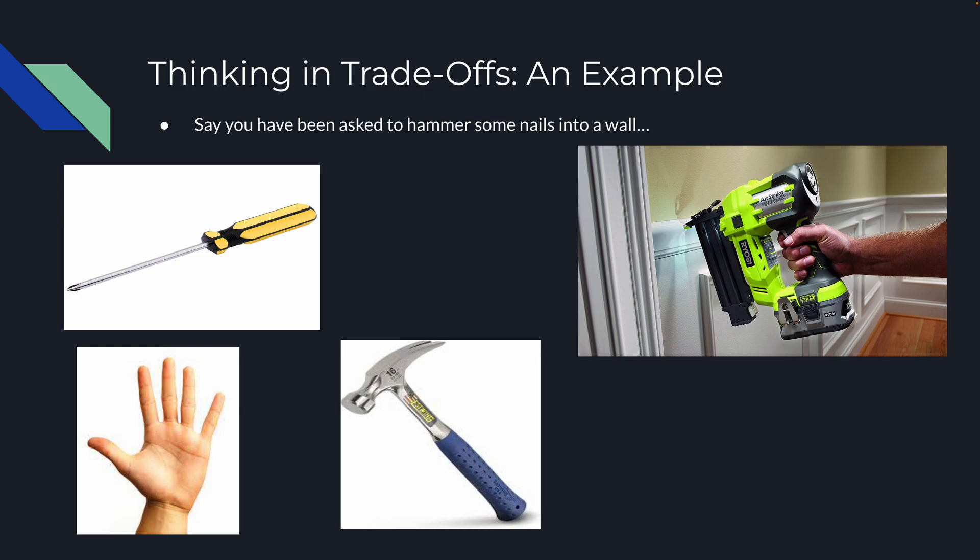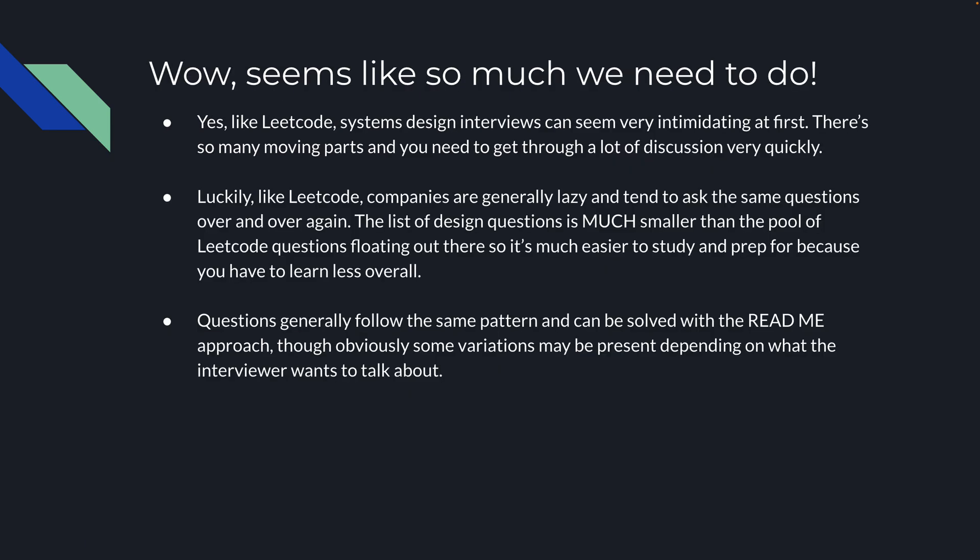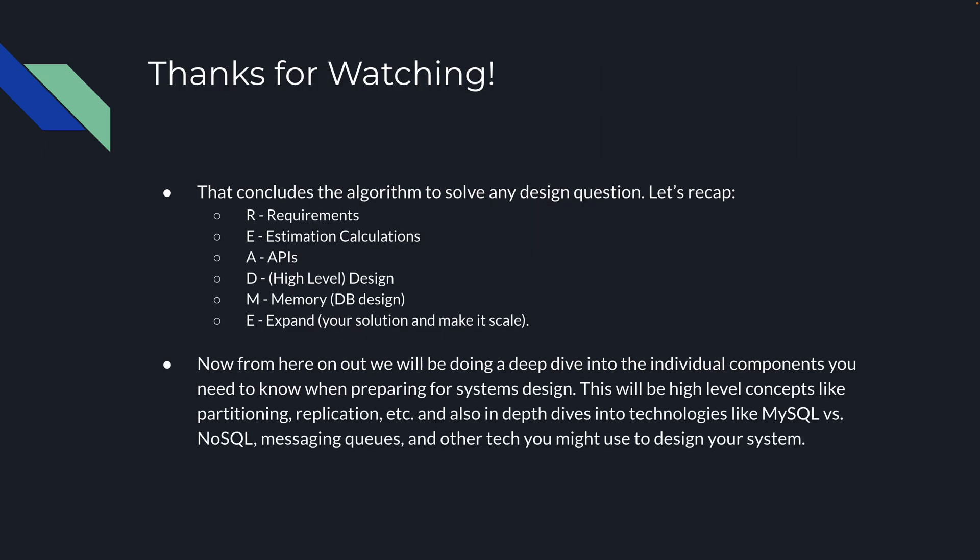System design interviews can seem really intimidating at first, but companies tend to ask the same questions repeatedly, and the pool is much smaller than LeetCode. Questions follow the same pattern and can be solved with the README approach. Let's recap: R for requirements, E for estimation calculations, A for APIs, D for high-level design, M for memory and database design, and E for expanding your solution to make it scale.